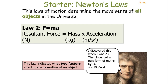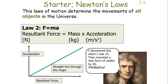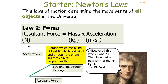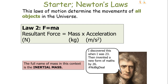This law indicates two factors that affect the acceleration of an object. Firstly, acceleration is directly proportional to the resultant force acting on the object — if we plotted acceleration and resultant force on a graph, we would observe a straight line through the origin, indicating direct proportionality. Acceleration is inversely proportional, however, to the mass of an object. The full name of mass in this context is called the inertial mass.